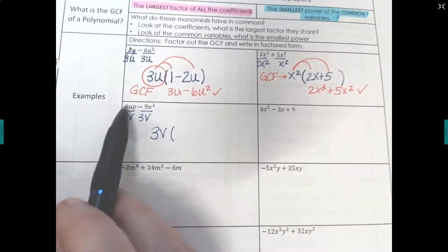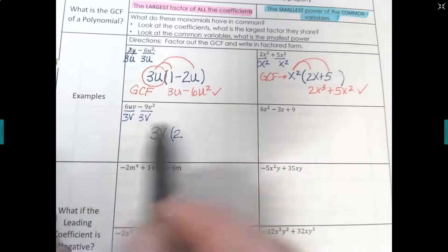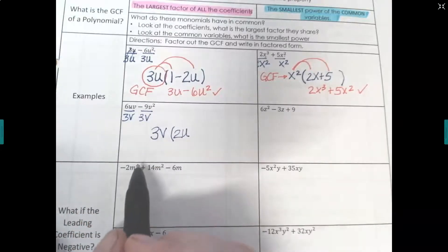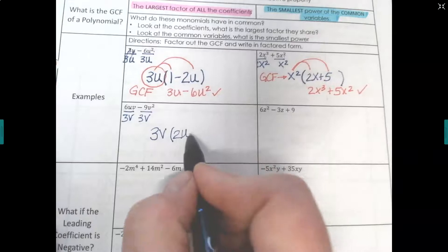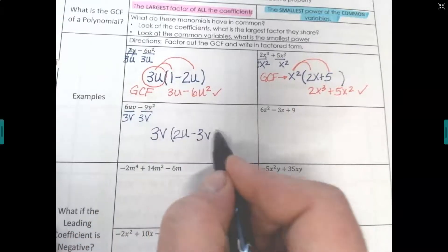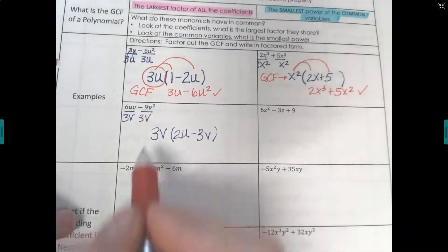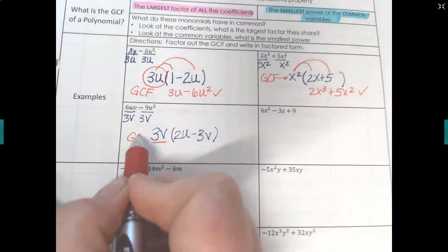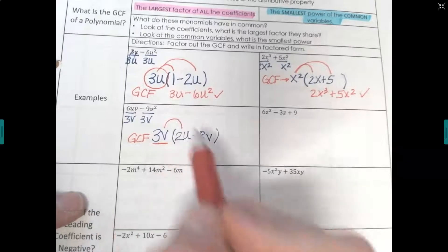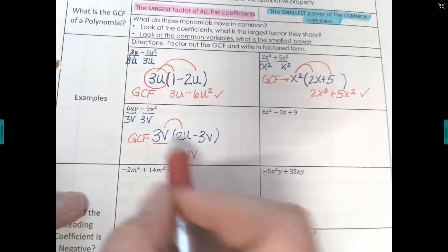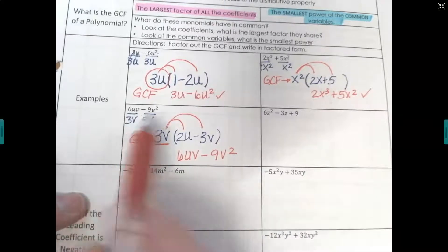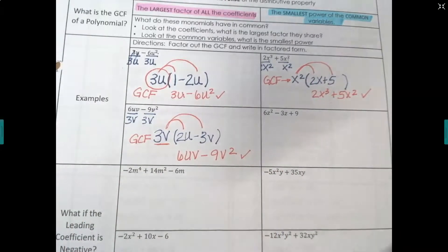What's left after dividing out 3v? 6 divided by 3 is 2, and u comes along unchanged. V divided by v cancels to 1. Then negative 9 divided by 3 is negative 3, and v squared divided by v leaves a single v. Check: 3v times 2u gives 6uv, and 3v times negative 3v gives negative 9v squared — that's what we started with.